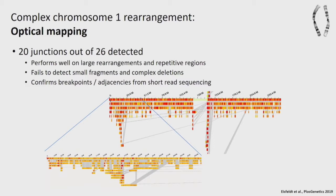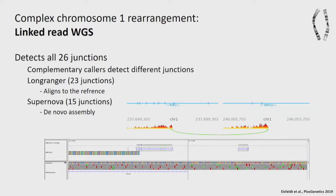The linked-read WGS outperformed the others, finding all 26 junctions. We used two software tools from the company — Long Ranger, which assembles barcodes into long molecules and maps them back to the reference (finding 23 junctions), and Supernova, which de novo assembles these molecules (finding 15 junctions, with 3 not found by Long Ranger). Together, we found all junctions present. The Long Ranger software shows the number of barcodes in a region and how the same barcode appears in another location; Supernova assembled calls are visible in IGV.